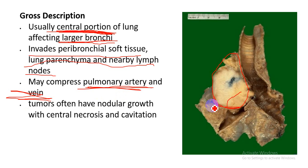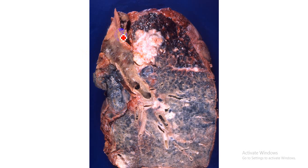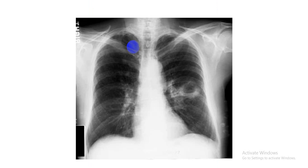The tumor often has nodular growth with central necrosis, and sometimes it may form a cavity — showing cavitation. In this gross image, you can see the primary bronchus with the tumor mass arising from it and extending into the lung parenchyma, sometimes compressing the pulmonary vessels and lymph nodes.